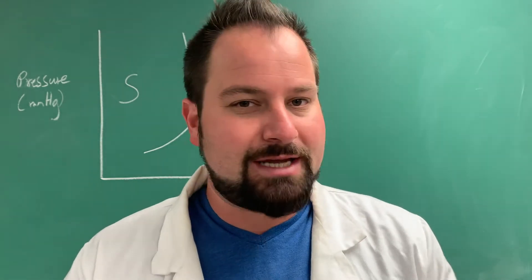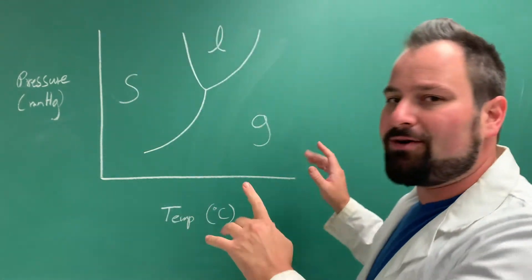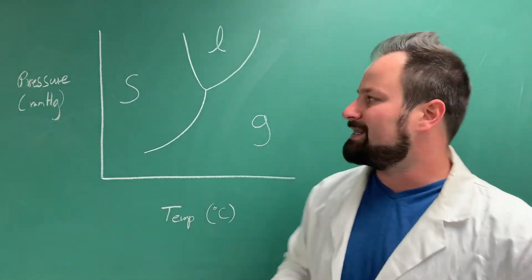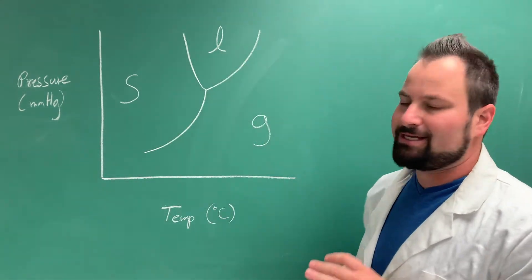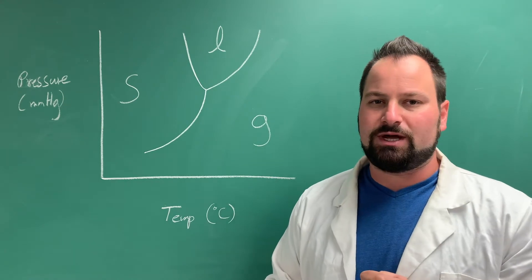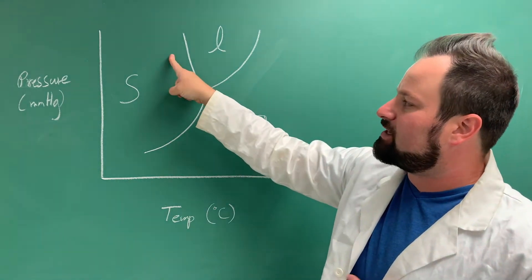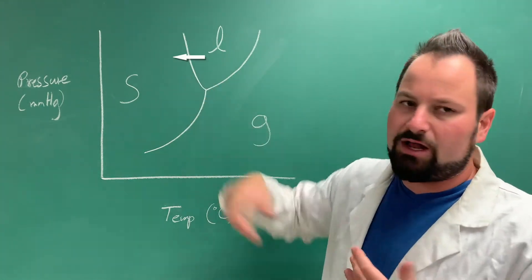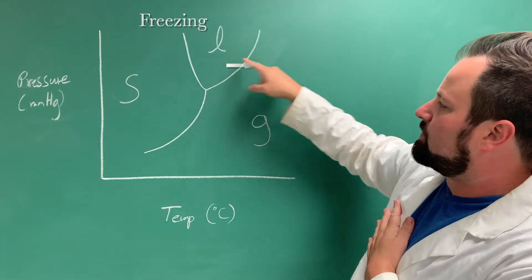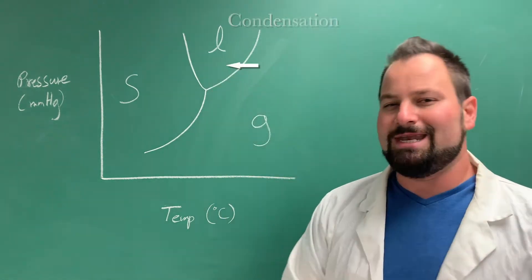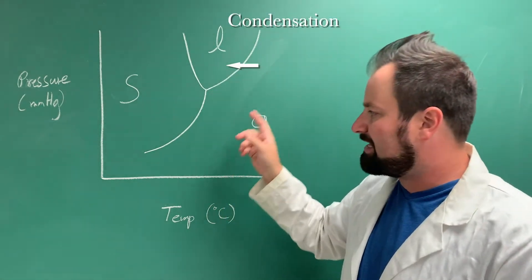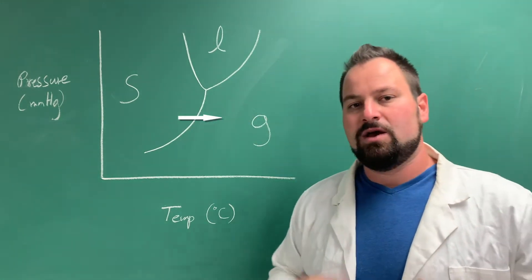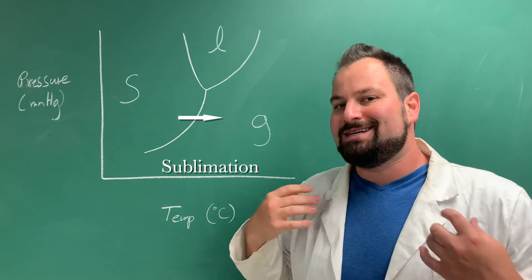Let's start with a little bit of a refresher. I have here a phase diagram — temperature on the bottom, pressure on the side. Solid, liquid, gas, and transition lines as you go from one to another. If you transition from solid to liquid, you've melted. Liquid to solid, you froze. Liquid to gas, you evaporated; gas to liquid, you condensed. But today we're talking about the next set: what if you go from a solid to a gas? In that case, you have sublimated.